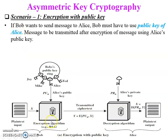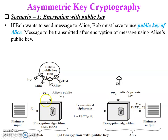Public and private keys are a pair of keys selected so that if one is used for encryption, the other is used for decryption. Either the public key is used for encryption and the private key for decryption, or the private key is used for encryption and the public key for decryption. Both scenarios will be discussed in this video.